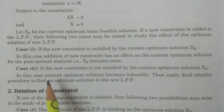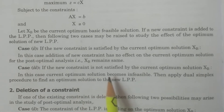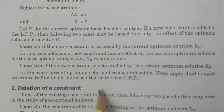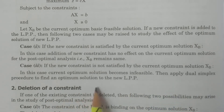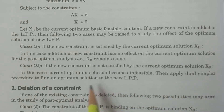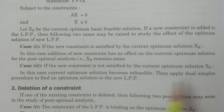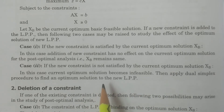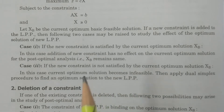Case two: if the new constraint is not satisfied by the current optimum solution xb, then the current optimum solution becomes infeasible. In this case, we have to apply the dual simplex procedure to obtain the optimum solution. This is the procedure for addition of a new constraint.